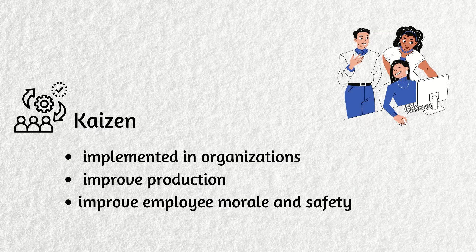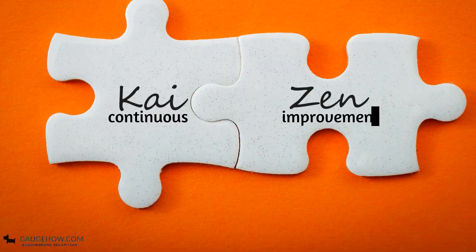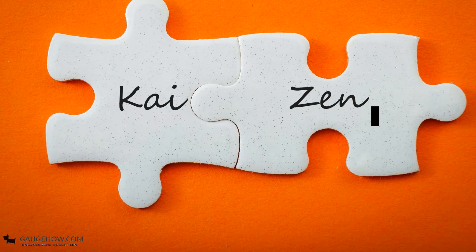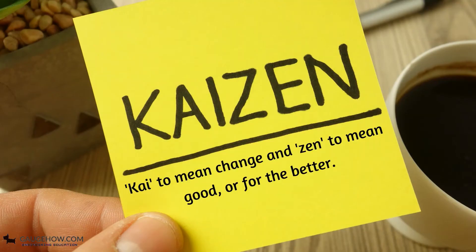Kaizen is a Japanese term that means continuous improvement, taken from the words Kai, which means continuous, and Zen, which means improvement. Some translate Kai to mean change and Zen to mean good or for the better.